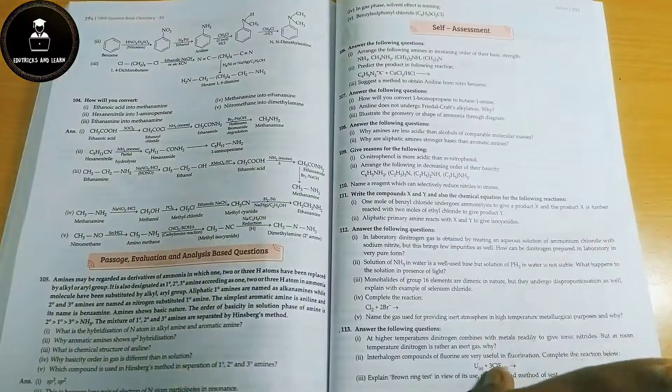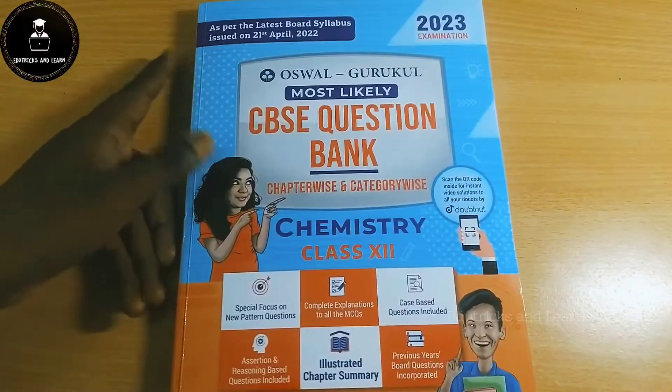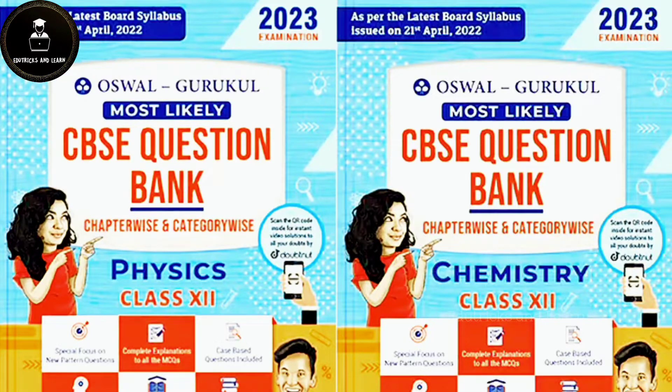At last, self-assessment. That's all about the Chemistry book. If you want to buy these books, the link of the book is given in the description box. We already have unboxed Biology in a separate video and English and Mathematics in a separate video. If you've not yet seen the video, the link is given in the description box.